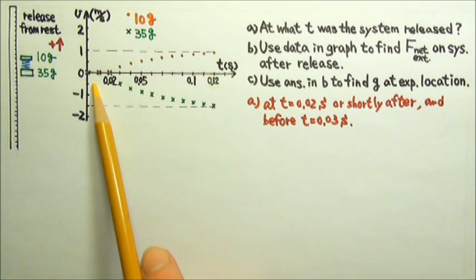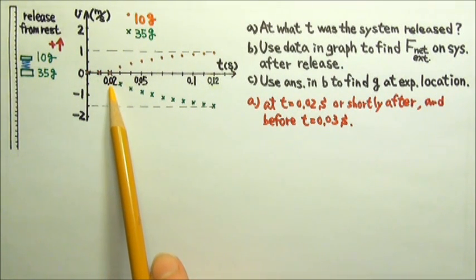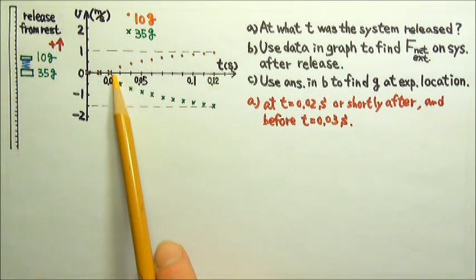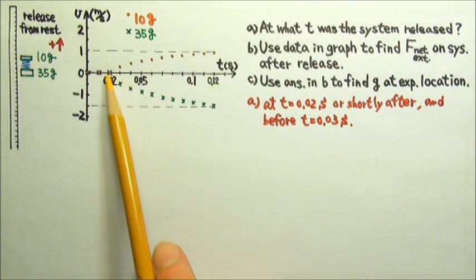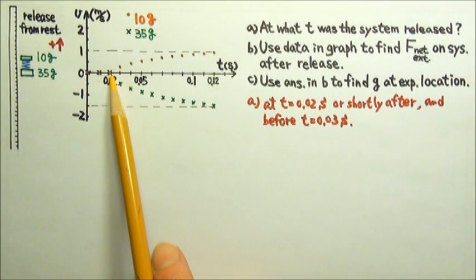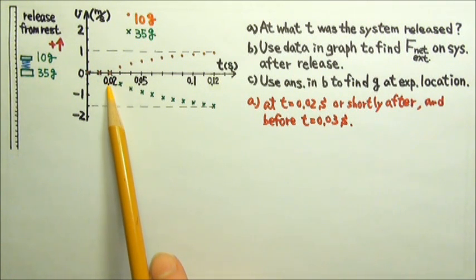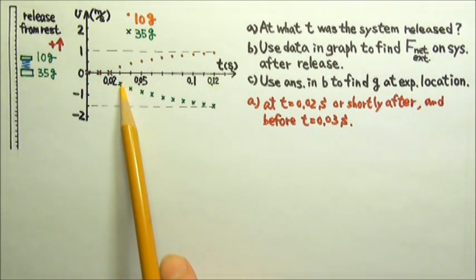According to the graph, the system is released at t = 0.02 seconds, or very shortly after, and definitely before 0.03 seconds. Because the graph shows that the blocks are still at rest before 0.02 seconds and no longer at rest at 0.03 seconds.